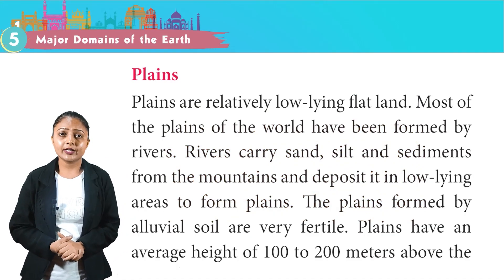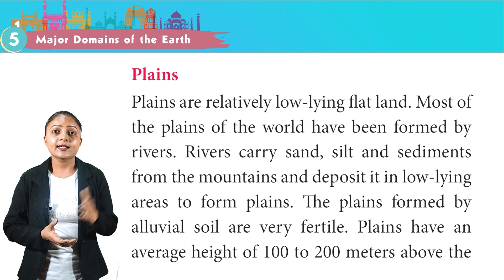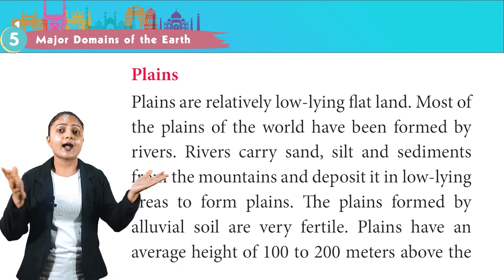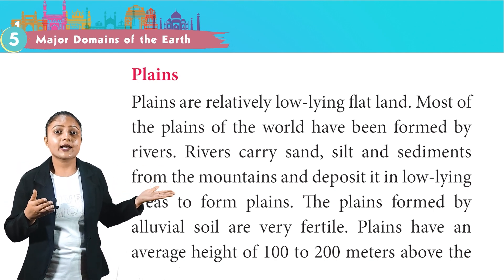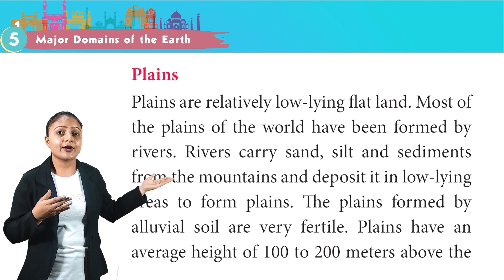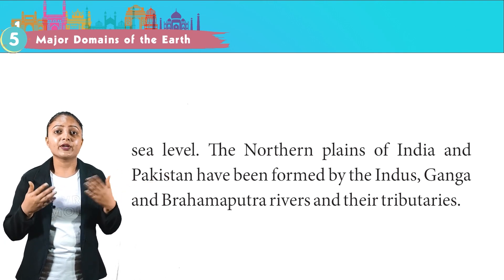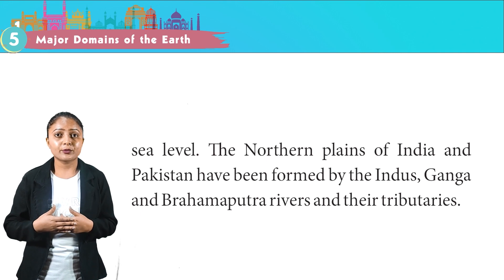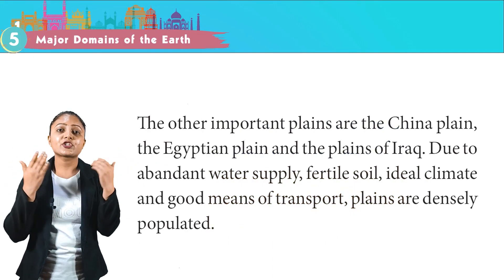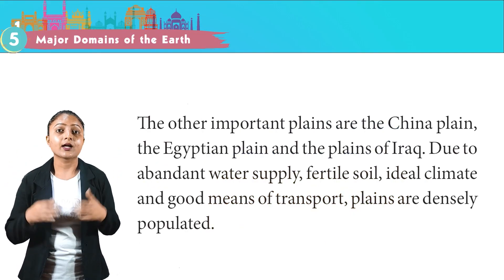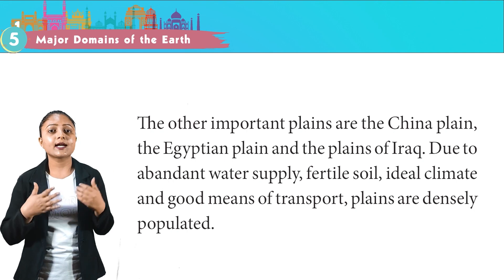Plains are relatively low-lying, flat land. Most of the plains of the world have been formed by rivers, which carry sand, silt and sediments from the mountains and deposit them in low-lying areas. The plains formed by alluvial soil are very fertile. Plains have an average height of 100 to 200 meters above sea level. The northern plains of India and Pakistan have been formed by the Indus, Ganga and Brahmaputra rivers and their tributaries. Other important plains include the China plain, the Egyptian plain and the plains of Iraq. Due to abundant water supply, fertile soil, ideal climate and good means of transport, plains are densely populated.